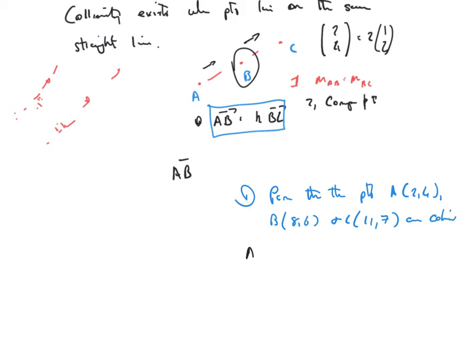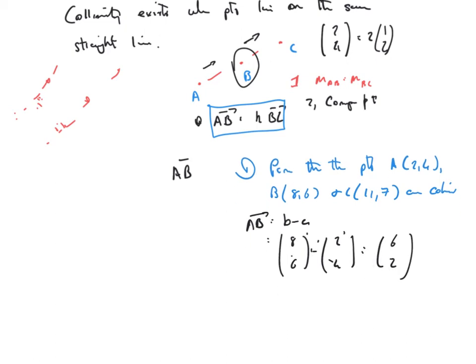Okay, so first move is, let's find the components of the position vector AB, which is going to be B minus A, so that's going to be (8,6) minus (2,4). 8 minus 2 is 6, and 6 minus 4 is 2. Okay, that's the position vector AB.